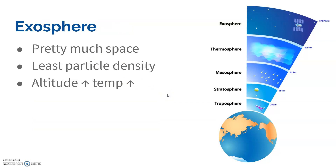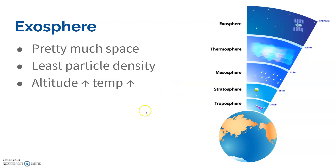Once we get to the exosphere, it's pretty much space. There are still some particles in here, but that's kind of where the line gets blurry — where does Earth end and space begin? Very small particle density, and we're still seeing that temperature increase — up to something like 1,700 degrees Celsius, which is really hot, 17 times the temperature of boiling water. But again, it still feels cold to you, because science is confusing like that.